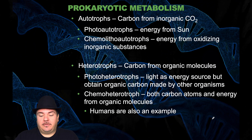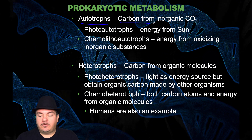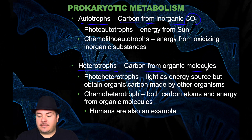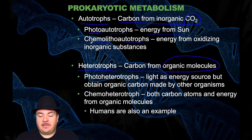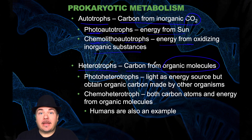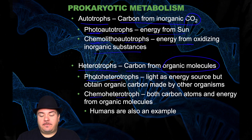Prokaryotes have different types of metabolism, falling into categories. Autotrophs get their carbon source from inorganic carbon dioxide. Heterotrophs get their carbon source from organic molecules such as glucose. Within autotrophs, you have photoautotrophs — which get their energy from sunlight — and chemoautotrophs — which get their energy from oxidizing inorganic substances. Heterotrophs also split into photoheterotrophs, which get energy from light, and chemoheterotrophs, which get energy from organic molecules.